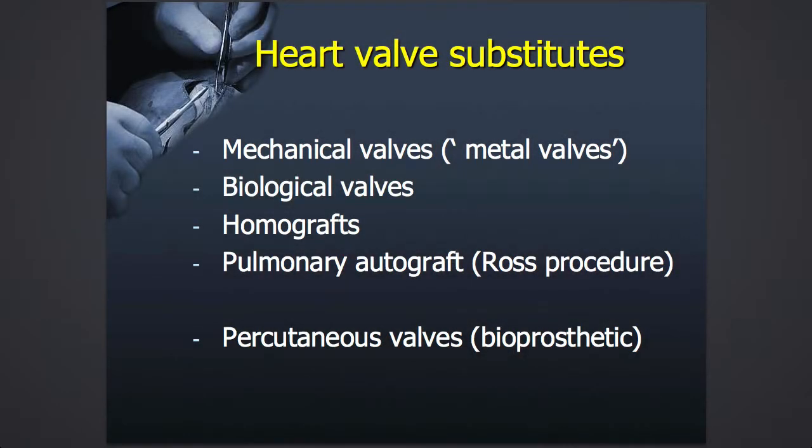So what do we have at the moment? We have a number of different groups of valves. We've got mechanical valves — commonly called metal valves, though they are more accurately metal alloys. Then we have biological valves, which are made from animal tissue, generally pigs or cows. We've got human donor grafts called homografts. And then in selected patients, we can move valves around in the heart — we can take the patient's own pulmonary valve and move it to the aortic valve position in order to get growth in that position.